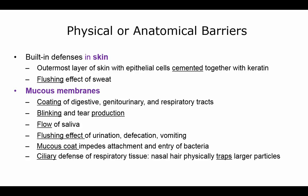Examples include your skin — the outermost layer with keratin that most things can't penetrate — as well as the flushing effect of sweat. Your mucous membranes coat your digestive, genitourinary, and respiratory tracts to help block entry of microbes. Blinking, tear production, and saliva also contribute, along with the flushing effect when you urinate, defecate, or vomit. The mucus coat traps bacteria and keeps it from attaching, and cilia in your respiratory system trap things before they reach the lungs.